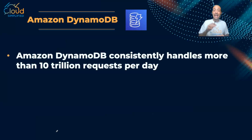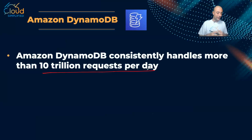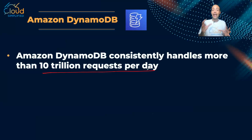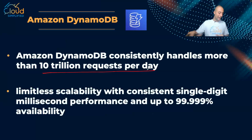DynamoDB can consistently handle more than 10 trillion requests a day. You might ask yourself: how can we even test a number like 10 trillion requests a day? Amazon actually reached a number very close to this about three years back, on one of the Black Fridays in the US. Amazon DynamoDB reached a number very close to 10 trillion requests on that single day. This is not just a marketing number — it is a real number that Amazon has practically approached.